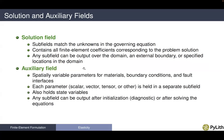The auxiliary fields are used to specify spatially variable parameters for materials, boundary conditions, and fault interfaces. Each parameter — whether a scalar, vector, or tensor — is held on a separate subfield. We also use auxiliary fields to hold the state variables. Any subfield can be output after initialization for diagnostics, or after solving the governing equations. Material properties are output automatically after PyLith performs initialization, and state variables are automatically output during the solve.